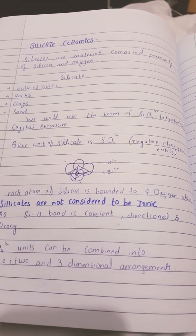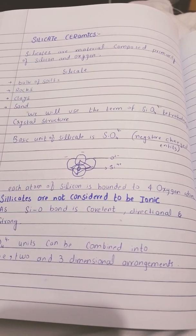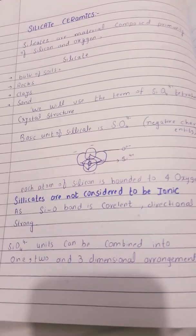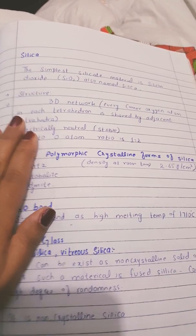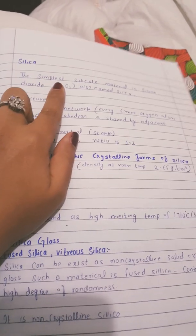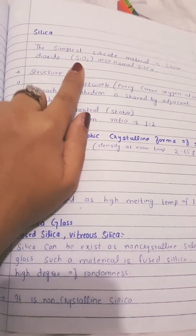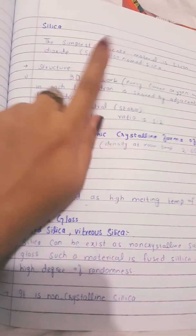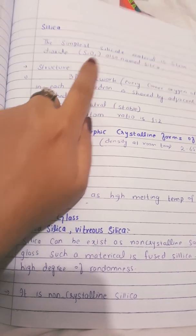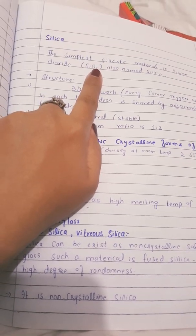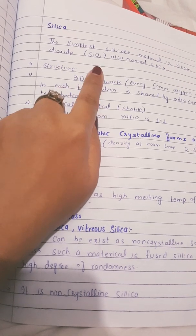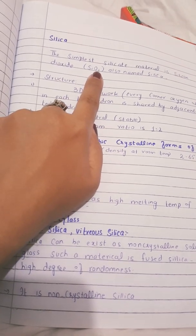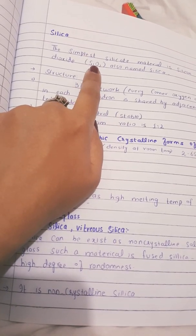Next we will shift to our next topic: silica. The simplest silicate material is silicon dioxide, SiO2, also named as silica. Its structure is a 3D network in which each oxygen at the corner is forming a bond with the other tetrahedrons, making it a 3D structure.